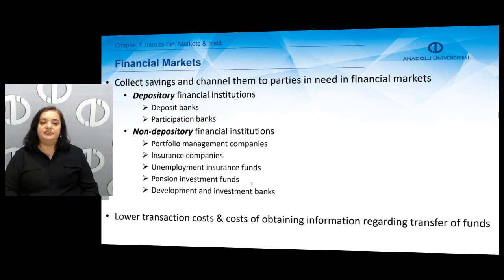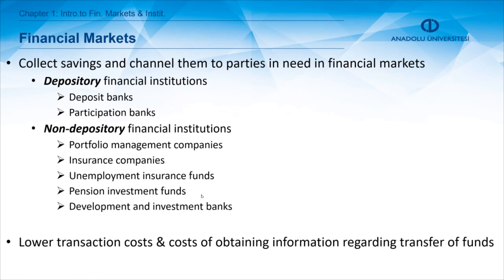Financial markets provide a platform for ultimate borrowers and ultimate lenders to come together and transfer their funds through financial instruments. In a way, financial markets collect savings and channel them to parties in need of funds. In financial markets, we can have financial institutions, which we can classify as depository or non-depository. Depository financial institutions are deposit banks and participation banks. Non-depository financial institutions include portfolio management companies, insurance companies, unemployment insurance funds, pension investment funds, and development and investment banks.